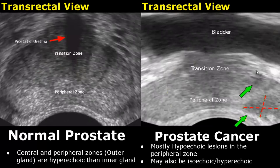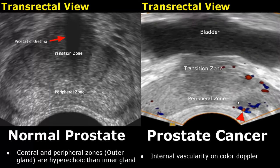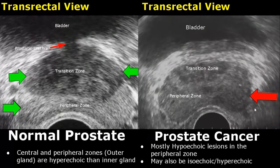Prostate cancers mostly occur in the peripheral zone. They usually appear hypoechoic, but in some cases can appear isoechoic or hyperechoic. On color Doppler, we will see internal vascularity with Doppler signals inside the masses. Here is another image of prostate cancer — a hyperechoic mass is seen in the peripheral zone.